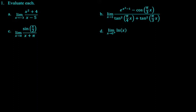So for the first one, if I just plug in negative 3 or substitute negative 3, I get 9 plus 4 is 13 over negative 3 minus 5 is negative 8. Negative 13 eighths. That's it.